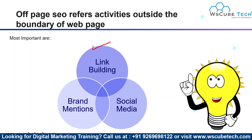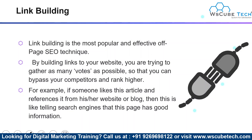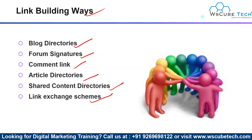In off-page SEO there are three particular activities which are very important. First, we have link building, which is the most popular and effective off-page SEO technique. You are building links to your website and trying to gather as many votes as possible so that you can bypass your competitors and rank higher. For example, if someone likes an article and references it from their website or blog, this is like telling the search engine that the page has good information. Different ways of doing link building include blog directories, forum signatures, comment links, article directories, shared content directories, and link exchange steps.